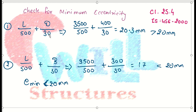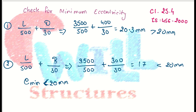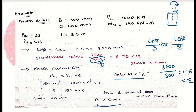For the larger lateral dimension: e_min = 3500/500 + 400/30 = 20.3 mm. For the least lateral dimension: e_min = 3500/500 + 300/30 = 17 mm. Since 20.3 mm exceeds 20 mm, we consider only 20 mm as the maximum. Our design eccentricity of 150 mm is greater than e_min, so we are within acceptable limits for eccentricity.